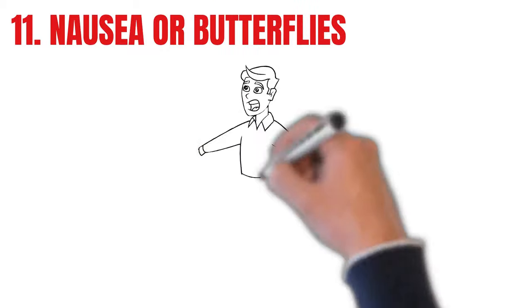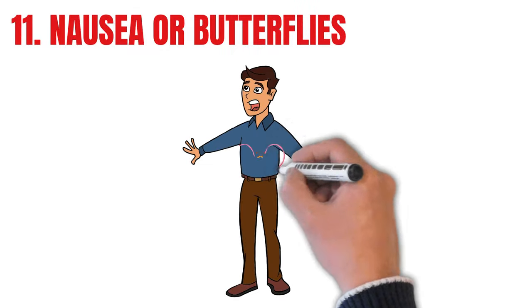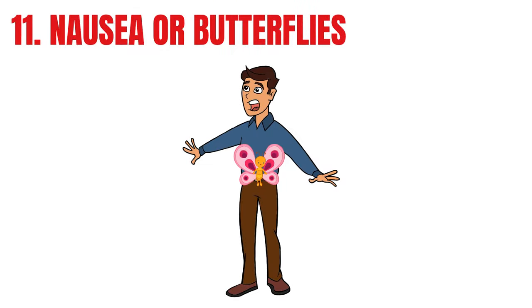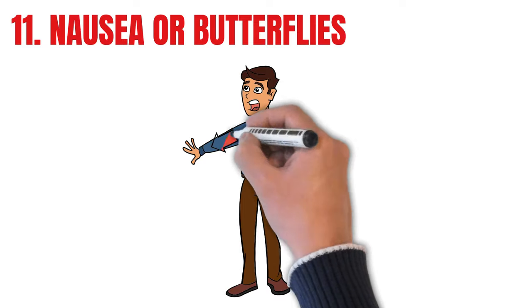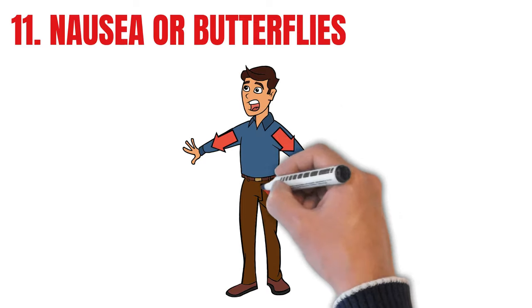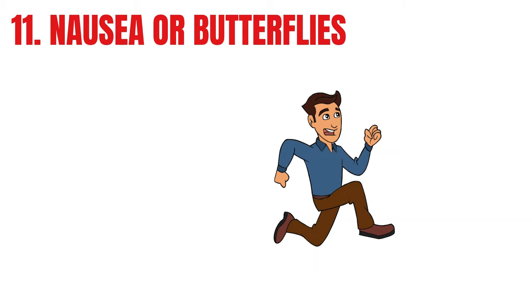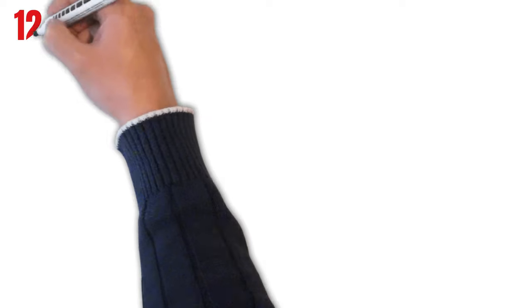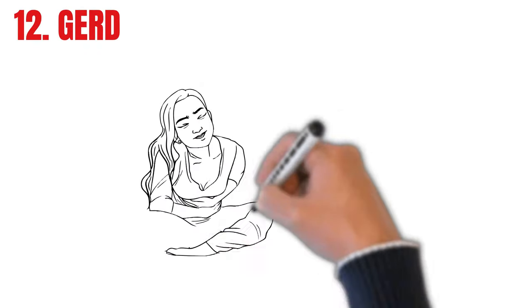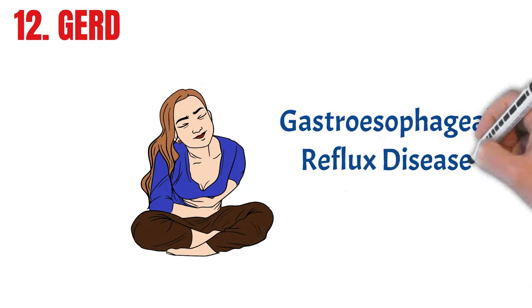Number eleven. Nausea, or the feeling of butterflies in the stomach. When the body senses danger, digesting food is not a priority. So, it diverts blood from the stomach to the arms and legs to fight or run. And that can upset the stomach. It can also affect the stomach in other ways, like causing acid indigestion.